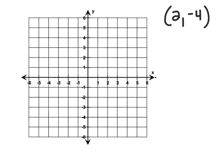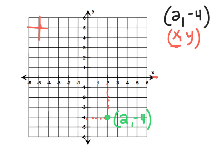Let's graph the point (2, -4). Start at the origin. The x is positive two, so go right two, then stop. The second number is negative four — that tells me to go down four spots. So I went over two and down negative four; that's where it crosses. Points always land on an intersection. So I just graphed the point two comma negative four.